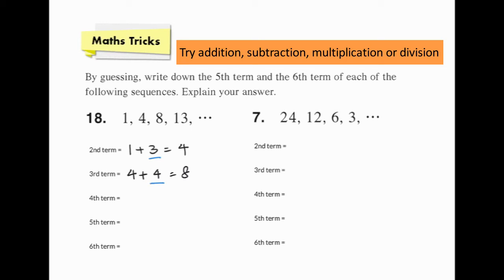Is the next row plus 5 then? Let's check. What is 8 plus 5? The result equals the fourth term 13. We can then use this rule to calculate the answer. The fifth term will be 13 plus 6, which is 19.